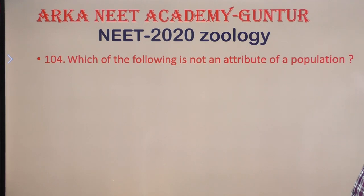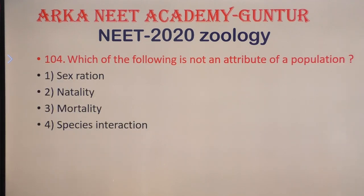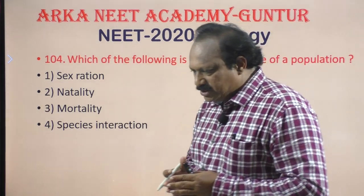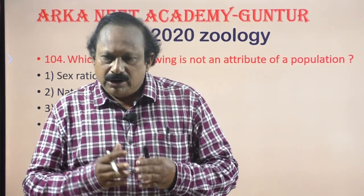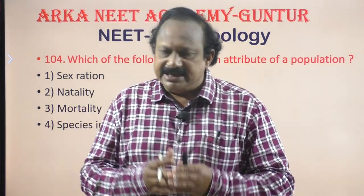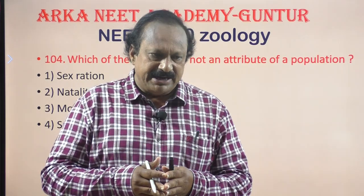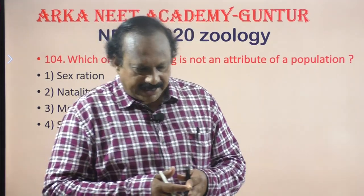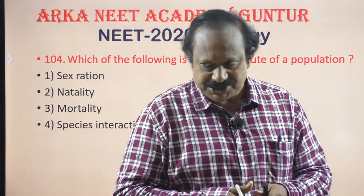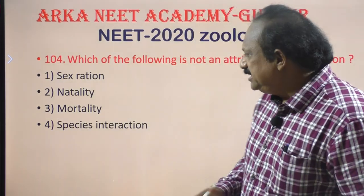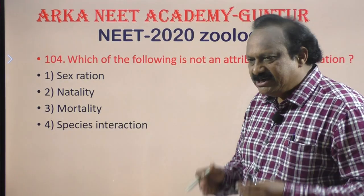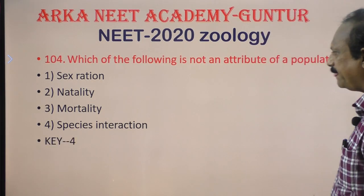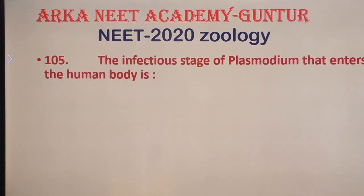A population shows attributes like natality, mortality, sex ratio, age pyramids, growth rate, and population density. However, species interaction is not at all a population attribute. So the answer is the fourth option.